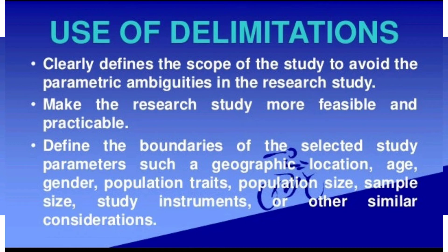Delimitation makes the research study more feasible and practicable to conduct. It defines the boundaries of selected study parameters such as geographic location, age (for example, 40 to 60 years), gender (only females or males), population characteristics, population size, sample size, and study instruments or tools used — so you can clearly proceed with the study with a clear cut idea of what to do.